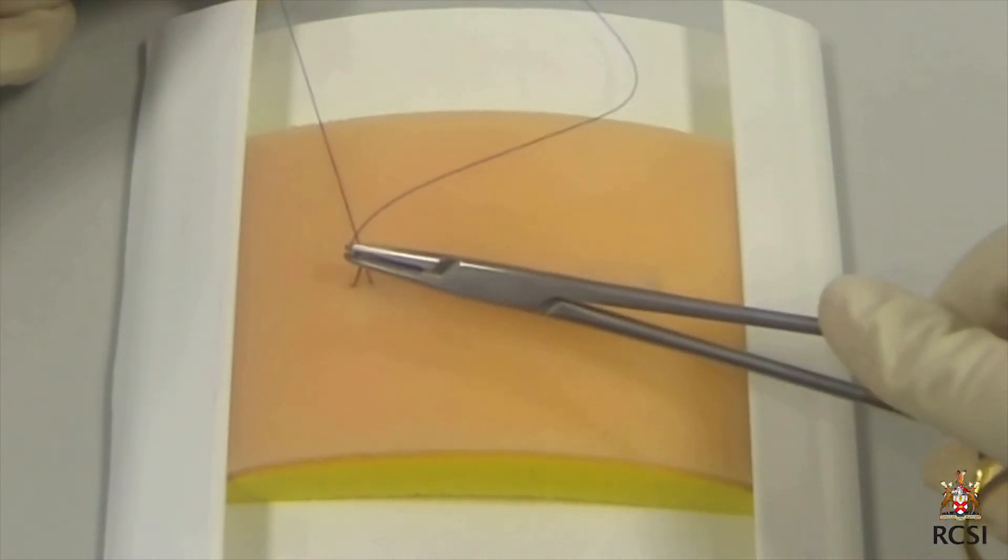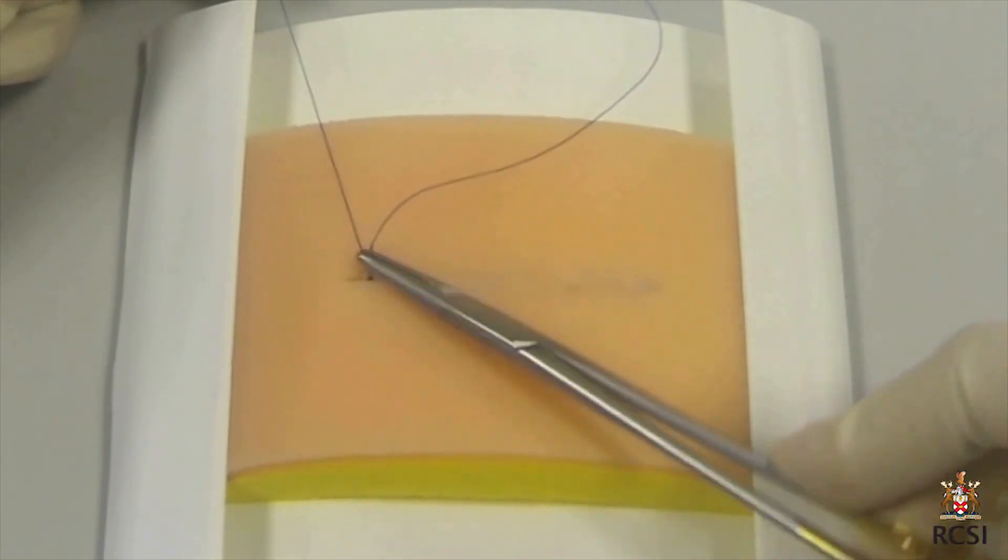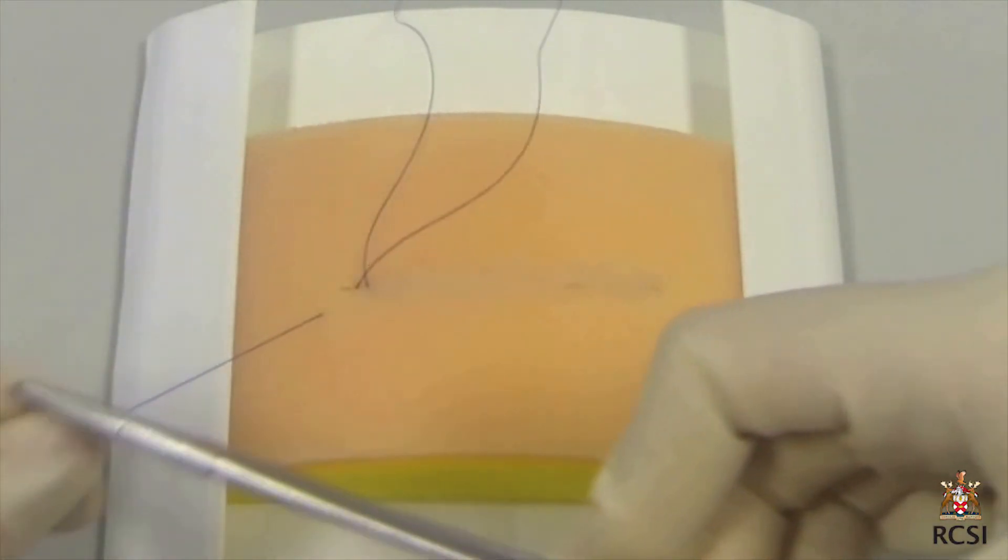After tightening 3 loops, the long end of the suture with the needle attached is pulled through the loop entirely and it is tightened. To bury this knot further, the needle is reinserted deeply away from the apex of the wound. Where the needle exits through the skin, the suture material is cut flush with the skin.